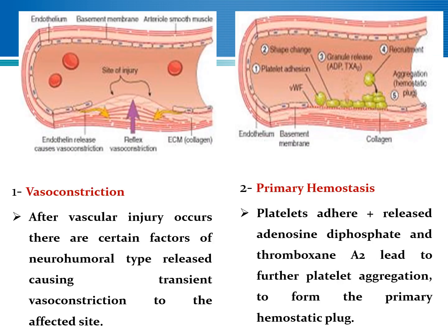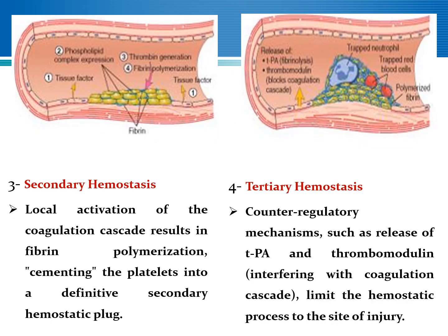As you see here, on the left side there is a vasoconstriction. Then to the right you will find the platelet aggregation to form the primary hemostatic plug. Then during the secondary hemostasis, there will be activation of the coagulation cascade to form the secondary hemostatic clot. Finally, there is a counter-regulatory mechanism to limit the hemostatic process at the site of injury by release of tissue plasminogen activators during the tertiary hemostasis.